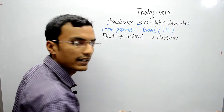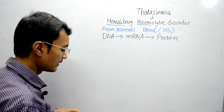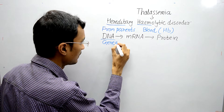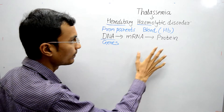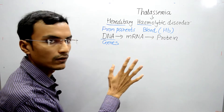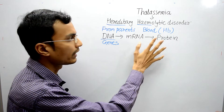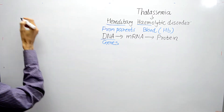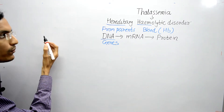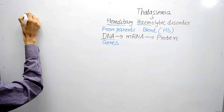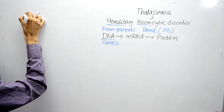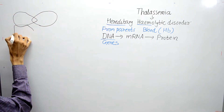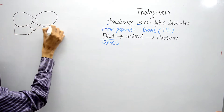Hemoglobin is a Quaternary Protein. There are genes that are responsible for coding of this protein Hemoglobin, or coding of the 4 different chains of the Hemoglobin protein. I will draw a simple diagram of Hemoglobin having 2 Alpha Globin Chains and 2 Beta Globin Chains.